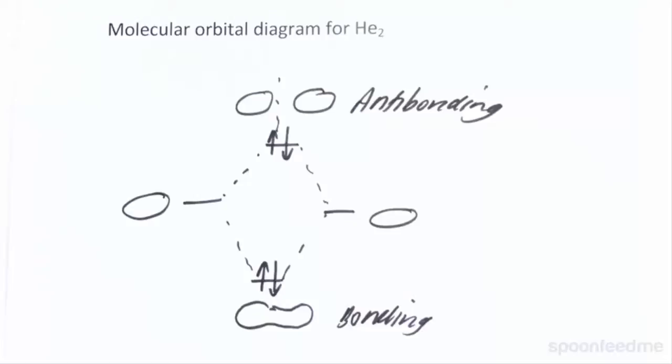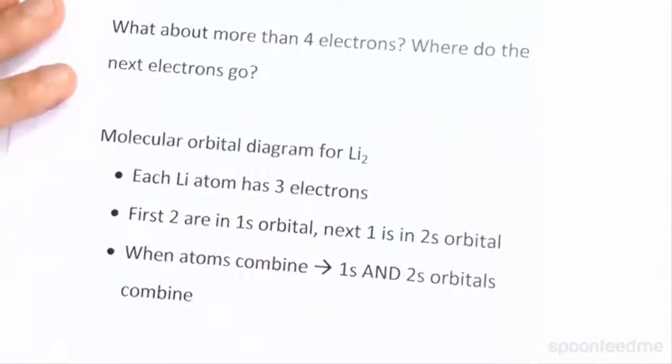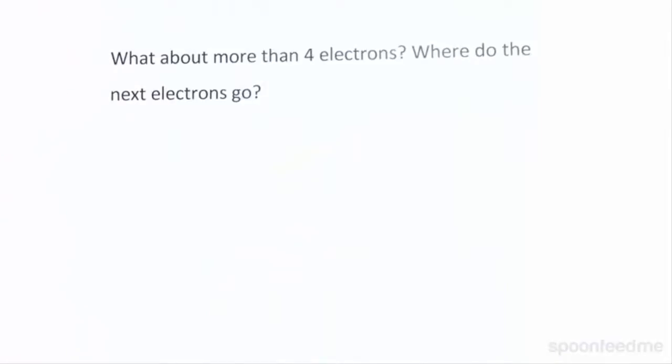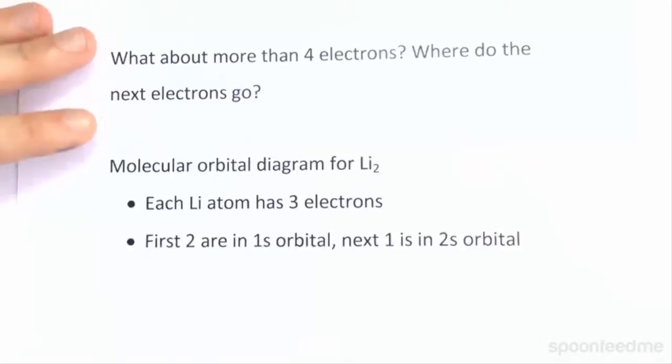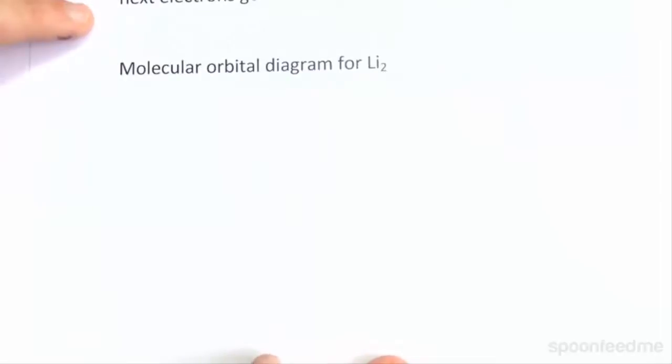So what about molecules with more than four electrons? Where do the next electrons go? The best way to explain this is with the diagram using lithium-2 as an example.